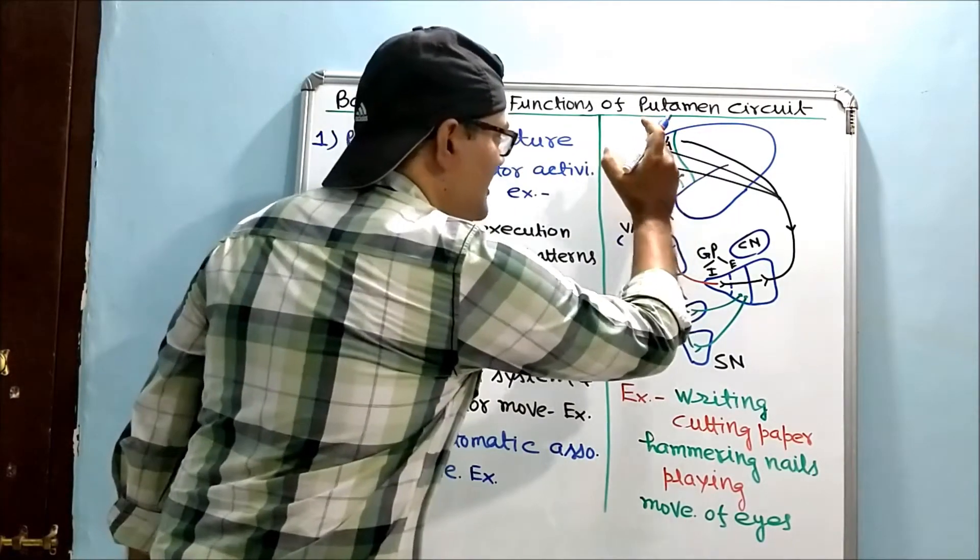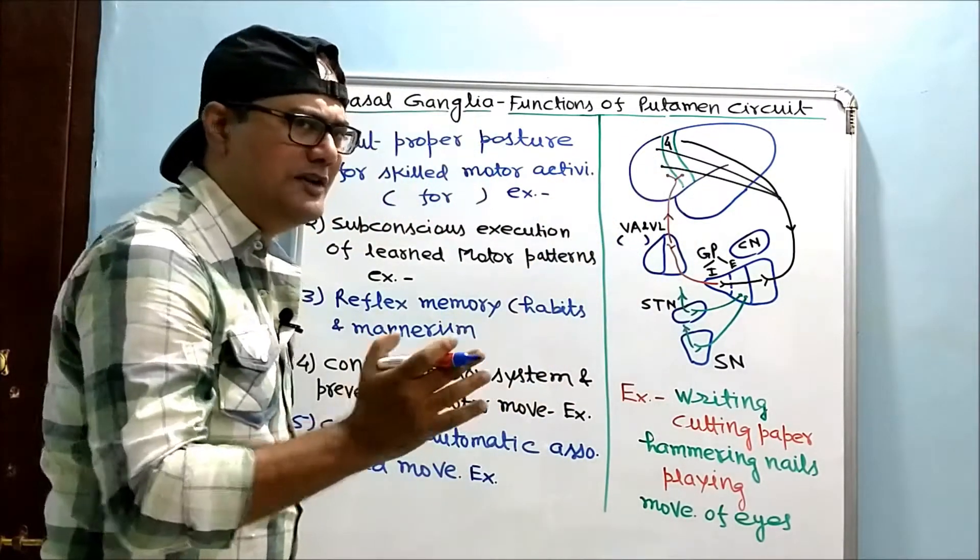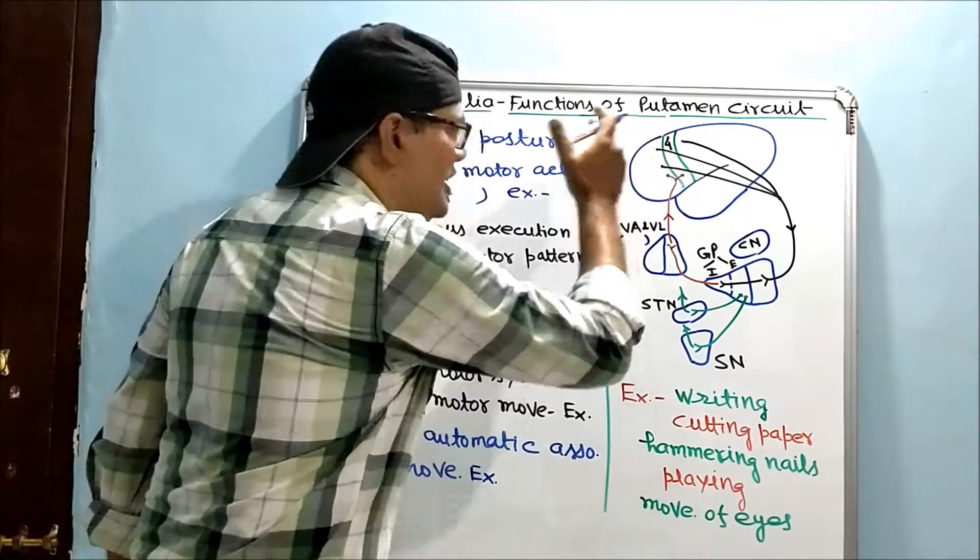All the areas beside area number four or primary motor cortex, but no fibers from primary motor cortex itself.